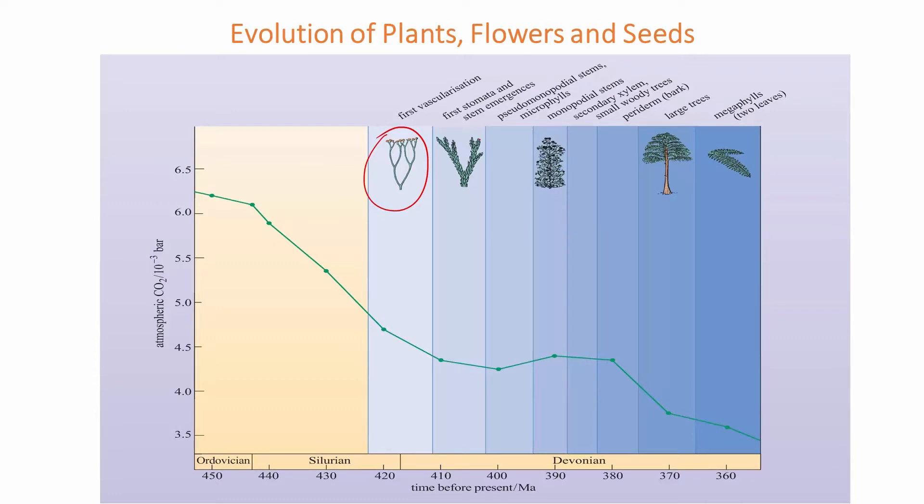Then first stomata and the stem began to emerge a few million years later, and various other species began to evolve. Large species evolved almost 50 million years later, and then complex leaf structures and so on. In another module, we will see how the leaf structure itself depends on environmental conditions.